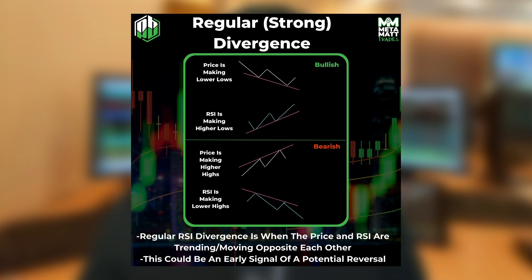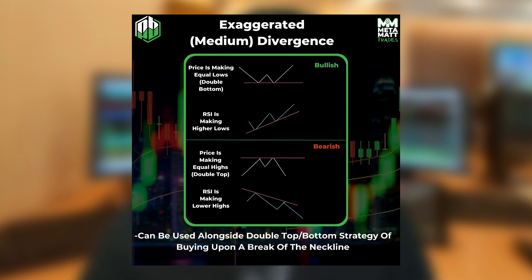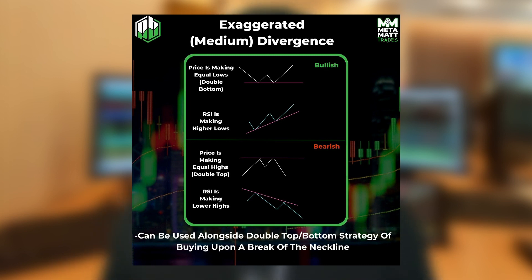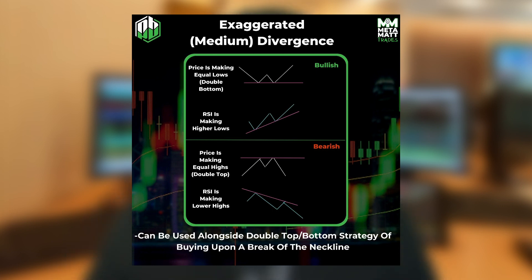Medium or exaggerated divergence for bullish is when the price is making equal lows, like a double bottom, and the RSI is making higher lows. The bearish version is when the price is making equal highs, a double top, and the RSI is making lower highs.